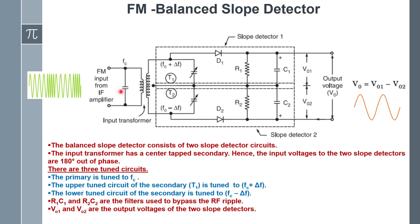Here the primary side and secondary side of the transformer are available. The first tuned circuit is tuned to carrier frequency fc, the upper tuned circuit is tuned to fc plus Δf, and the lower tuned circuit is tuned to fc minus Δf. R1 and C1, similarly R2 and C2 — both sets of RC circuits are used for filtering purpose to eliminate ripples. The final output is V01 and V02, and the net output is the difference between V01 and V02.